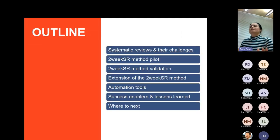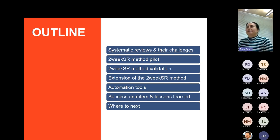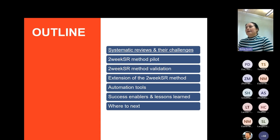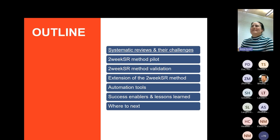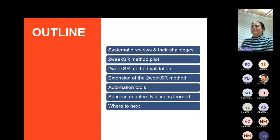To structure the talk: I'll discuss some of the challenges inherent in systematic reviews and ways we're trying to address them — the two-week systematic review pilot, subsequent validation, and extension to another type of evidence synthesis. I'll then shift to the role of automation tools, the 'don't repeat our mistakes' section on enablers of success, things we've learned, and where we want to go next.